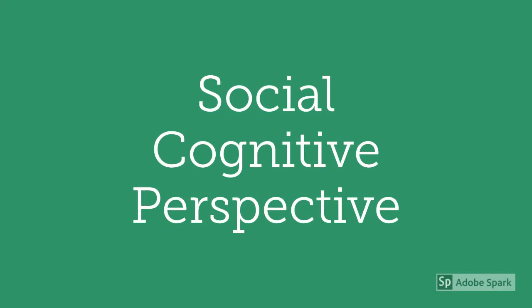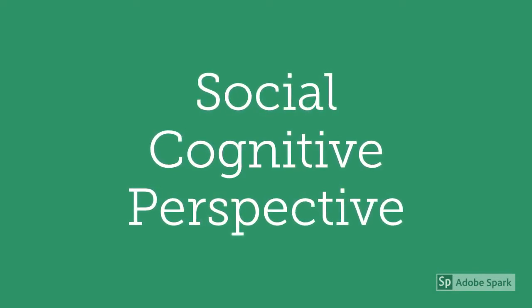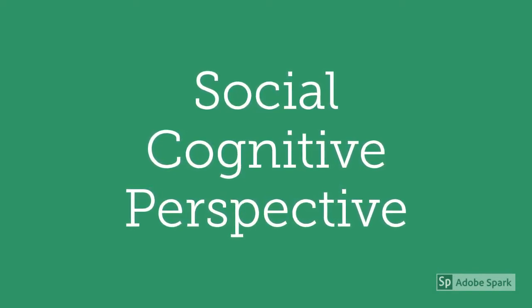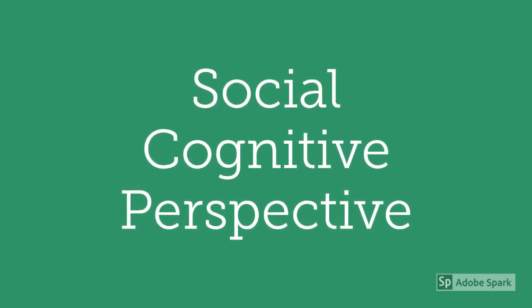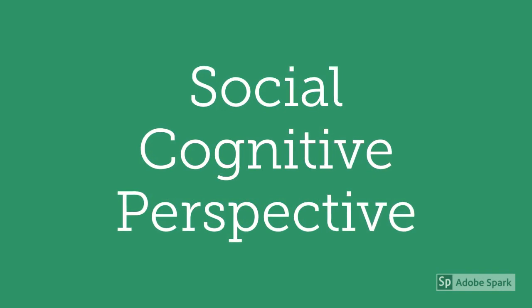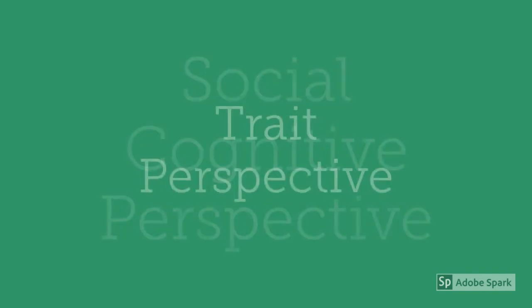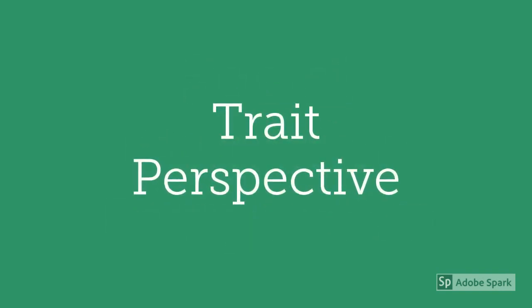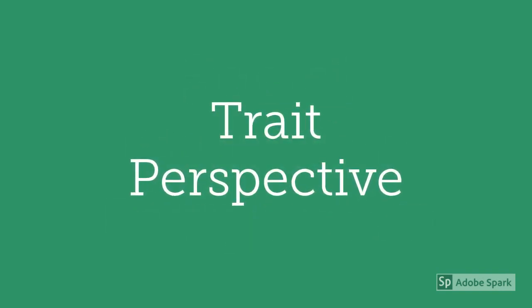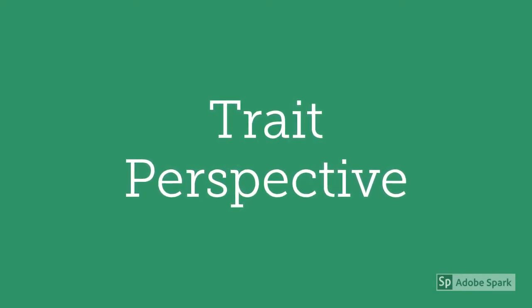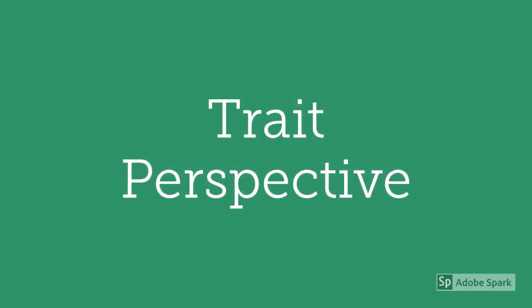The social cognitive perspective emphasizes learning and conscious cognitive processes, including the importance of beliefs about the self, goal setting, and self-regulation. The trait perspective emphasizes the description and measurement of specific personality differences among individuals.